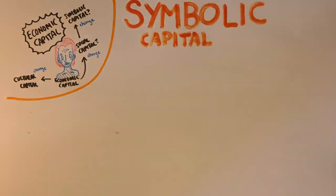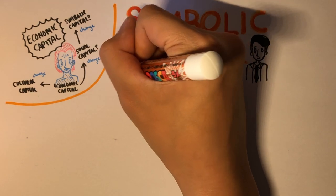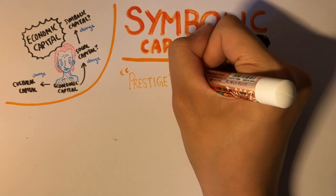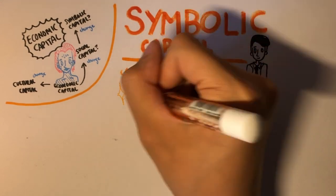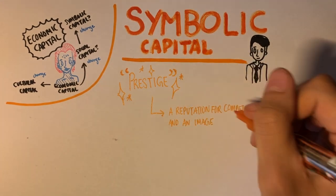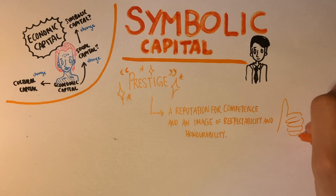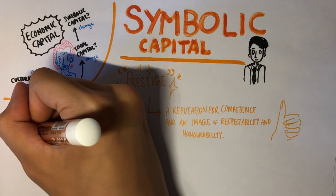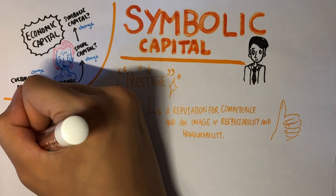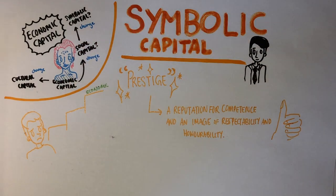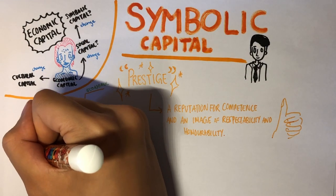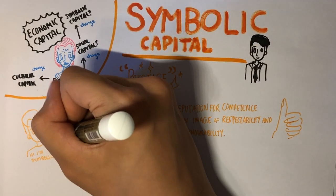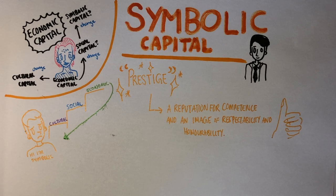Moving on to symbolic capital. Symbolic capital is the last species of capital. It is less essential to the social world than cultural, social, and economic capital. Loosely speaking, it's the amount of prestige you have. Prestige can be defined as a reputation for competence and an image of respectability and honorability. Instead of existing on the same level as economic, cultural, and social capital, it's a value that indicates the recognition and therefore legitimization of your other forms of capital. Capital only truly elevates your social status if it's recognized, and recognition comes in the form of symbolic capital.